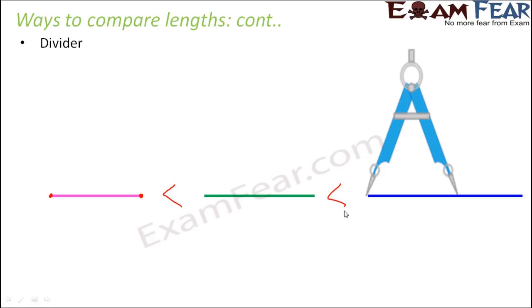And in this case the chances of positioning error is less. That's because here you are not reading any value as such. So you just need to make sure that the two ends of the divider overlap with the two ends of the line segment, and that's how you can get an idea about the length of that line segment.